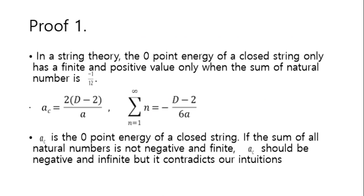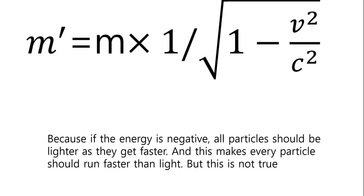In string theory, the zero-point energy of a closed string only has a finite and positive value when the sum of natural numbers is minus 1 over 12. AC is the zero-point energy of a closed string. If the sum of all natural numbers is not negative and finite, AC should be negative and finite, but it contradicts our intuition. Because if the energy is negative, all particles should become lighter as they get faster, and this makes every particle run faster than light — but this is not true.